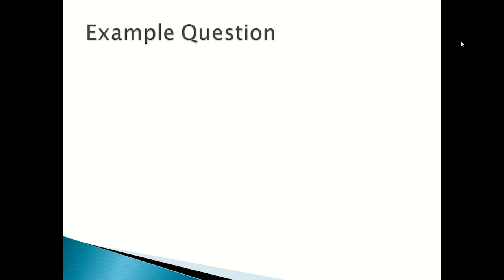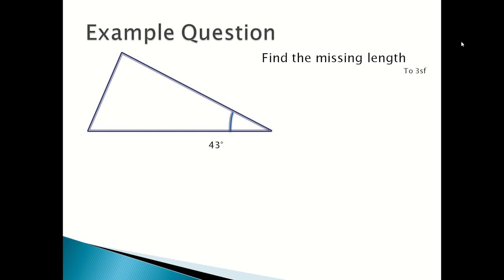Now we are going to look at an example question. The question is find the missing length. This is the usual question that you will get for the cosine rule, and you will give your answer to three significant figures. Here's the triangle. The angle is 43 degrees. One side is 6.2 meters, the other side is 5.3 meters. And you need to find the missing side. First you state your formula.